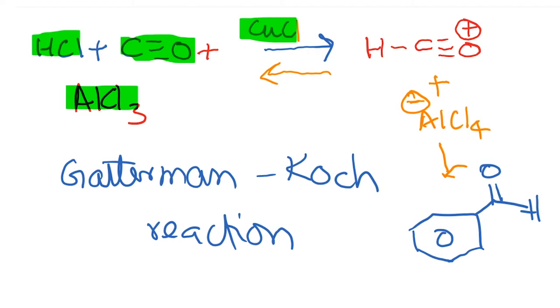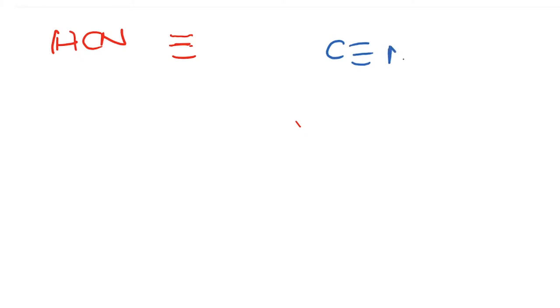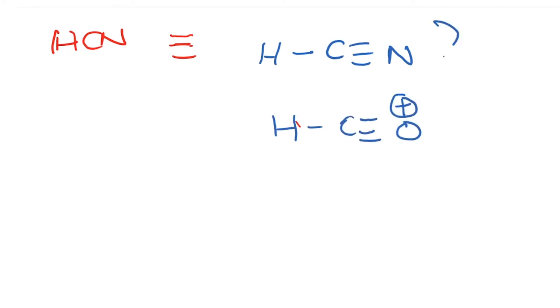Now there is a variation of this reaction: instead of using carbon monoxide, you could also use HCN — hydrogen cyanide. CN is essentially C≡NH, and if you recall, the intermediate we were looking at was HC≡O+. These two are actually isoelectronic, so you can use HCN for this same formylation reaction.